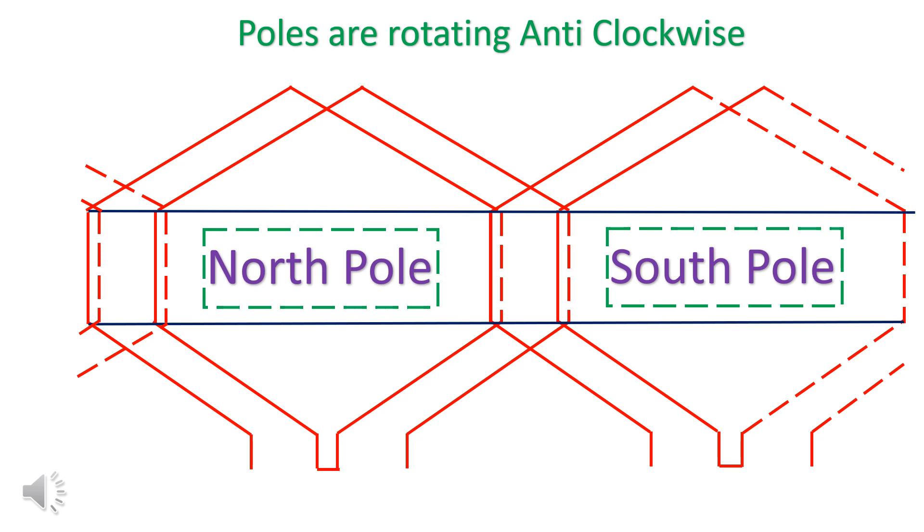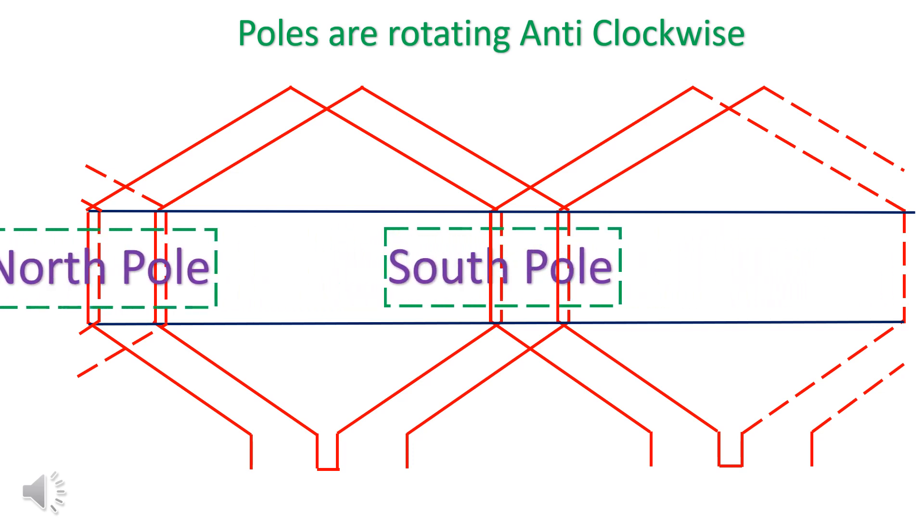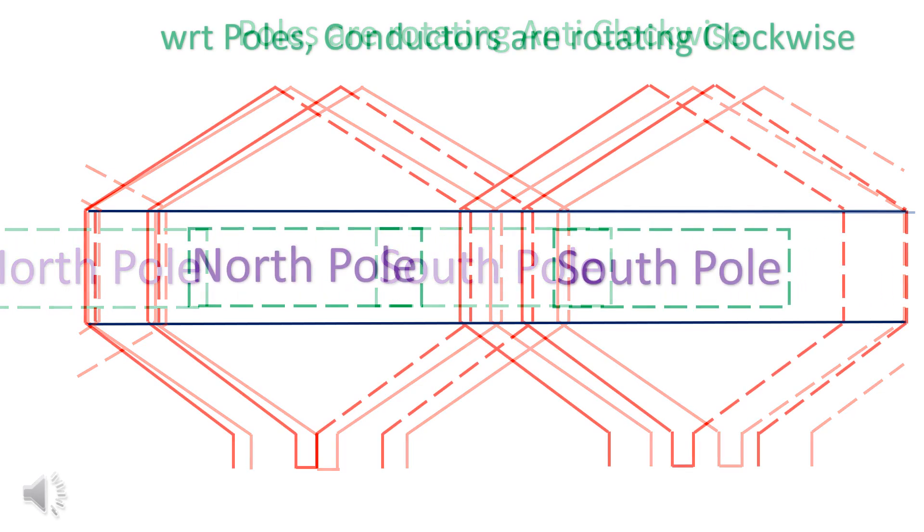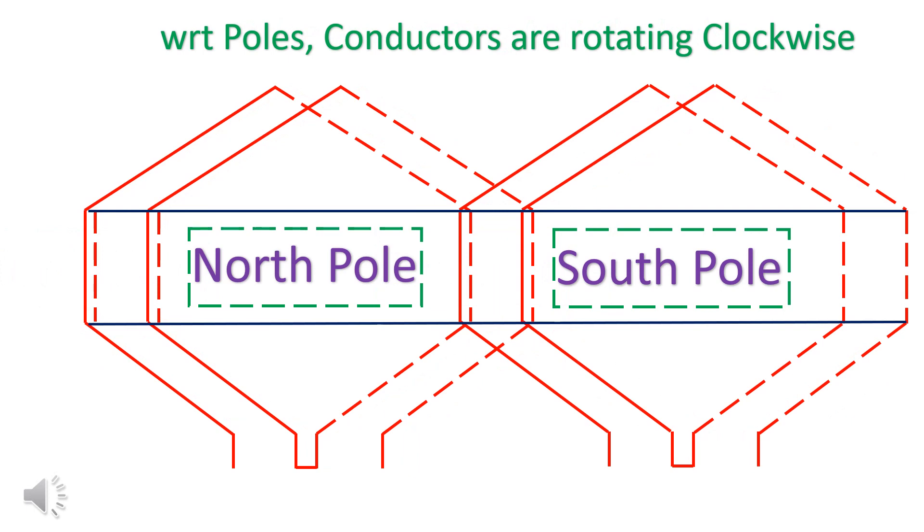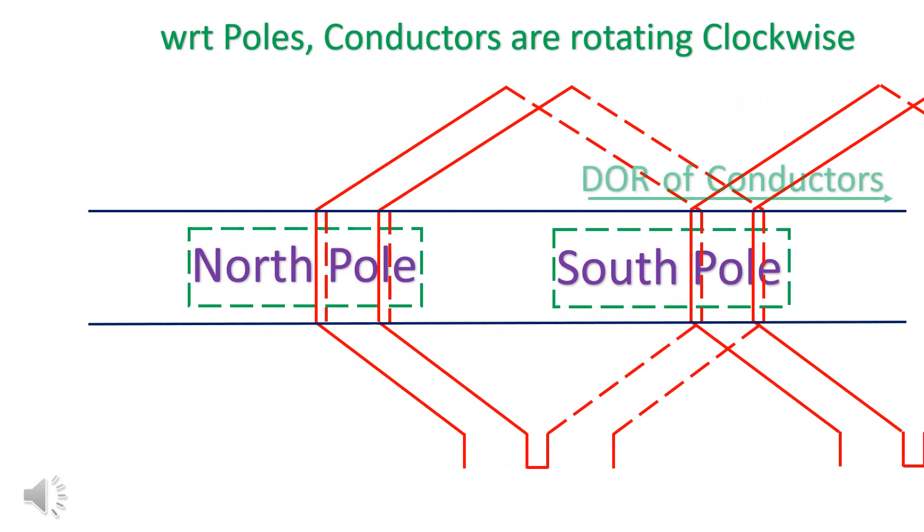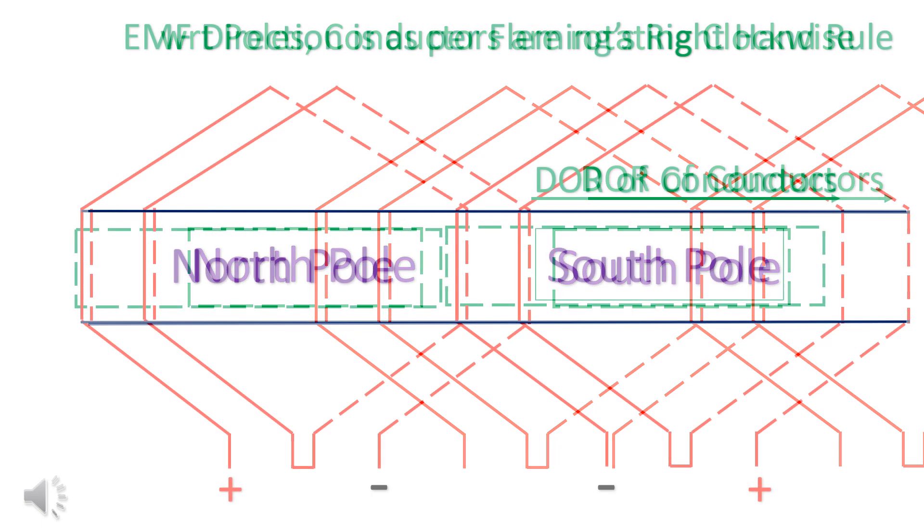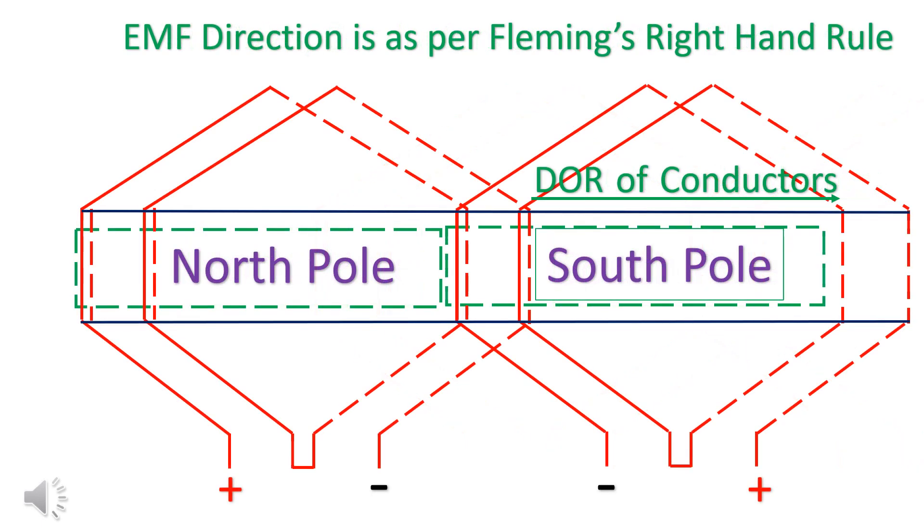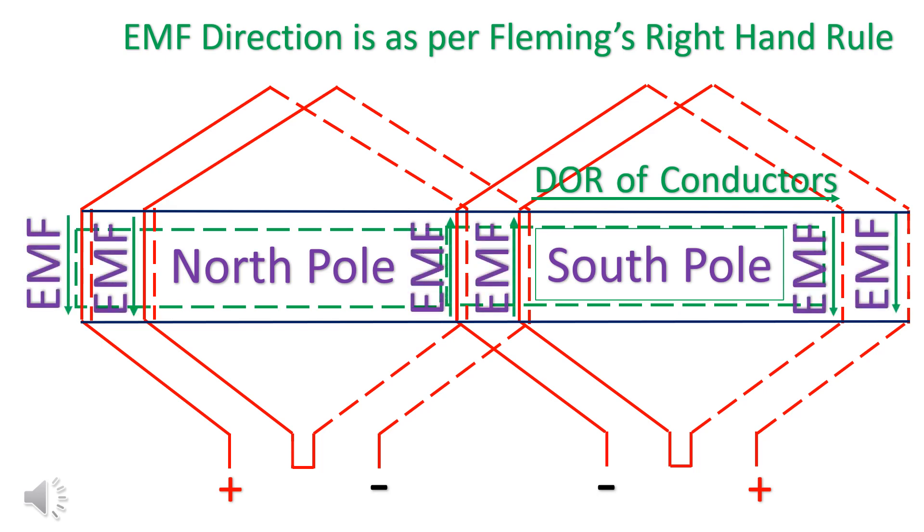Let the poles are rotating anti-clockwise. With respect to the poles, conductors are rotating clockwise. The direction of EMF is found as per Fleming's right-hand rule.